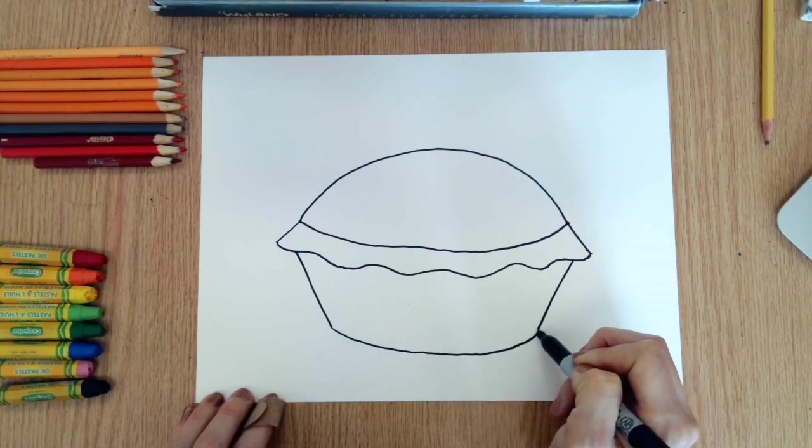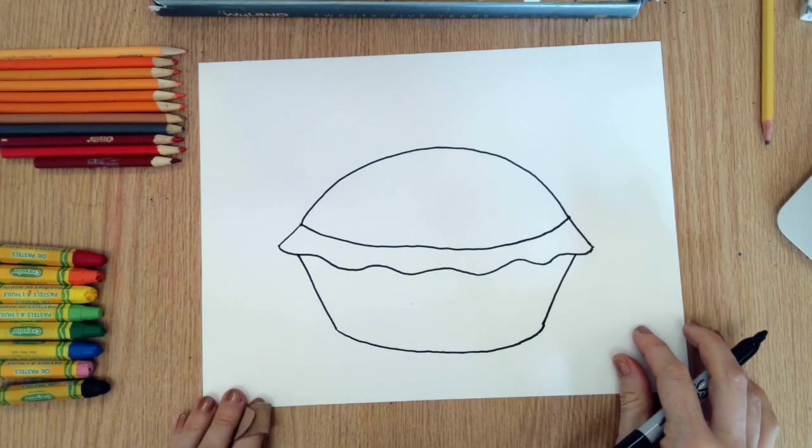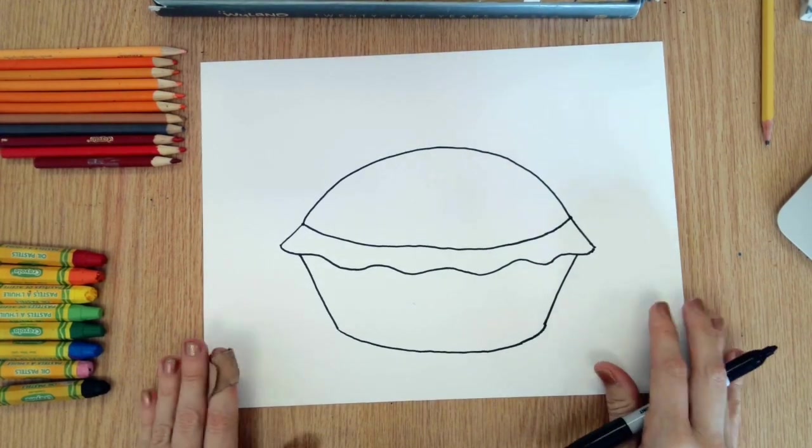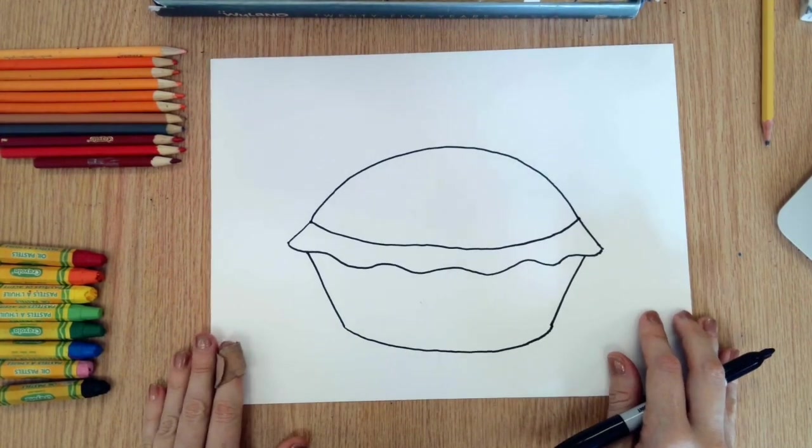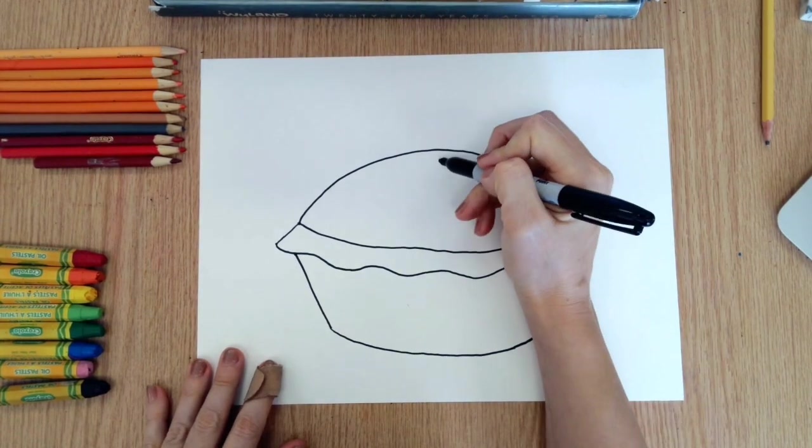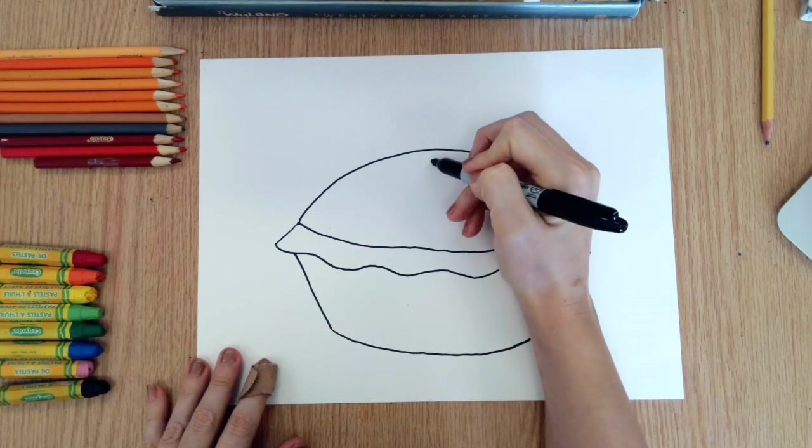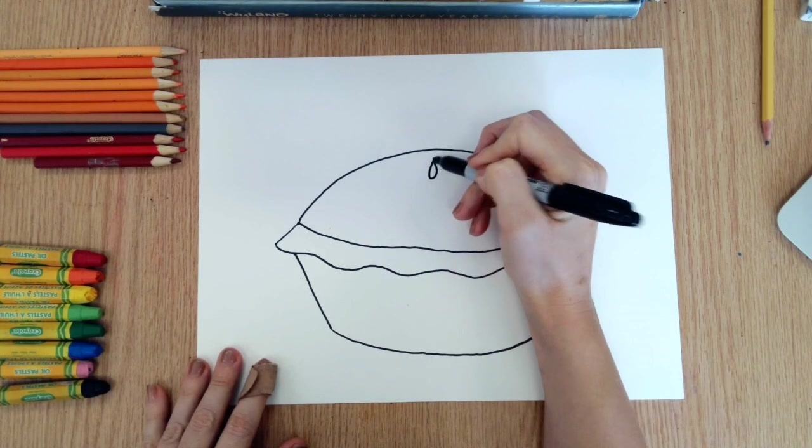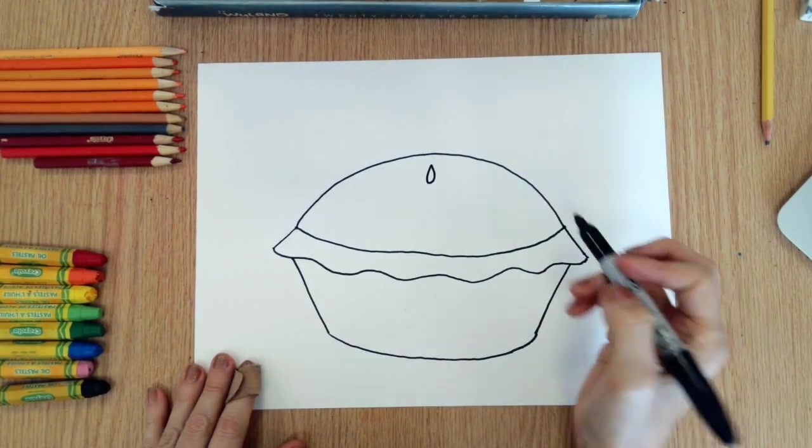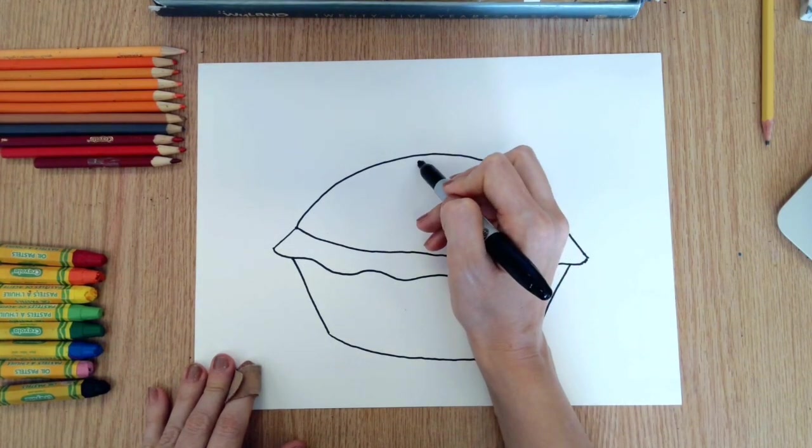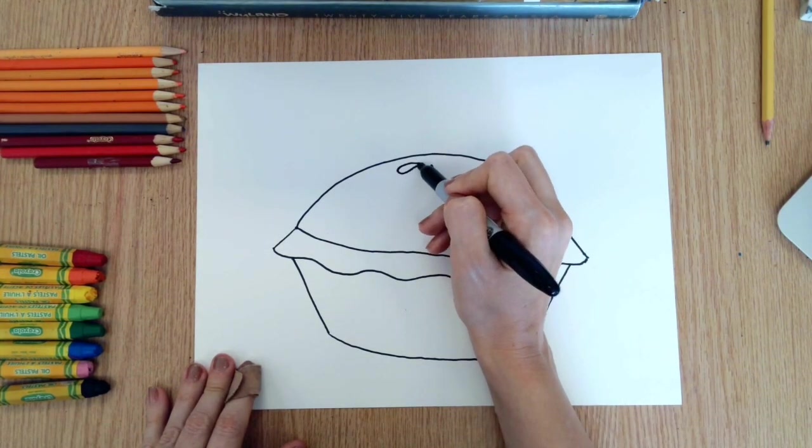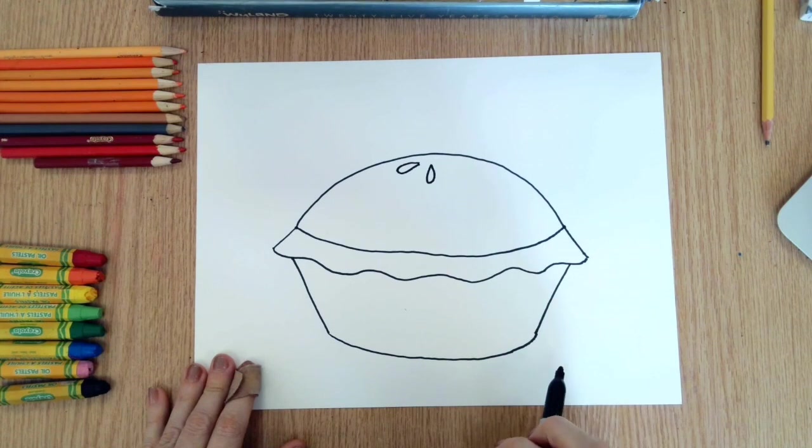Next, details. There's always holes in the top of a pie so it doesn't explode in the oven, right? So we're gonna make a teardrop shape in the middle, and then on the left we're gonna make a teardrop shape going off to the left, and then we're gonna make another one going off to the right.